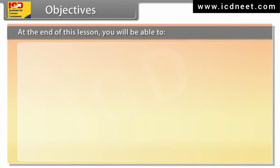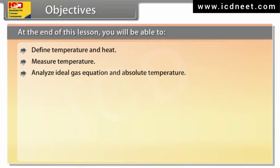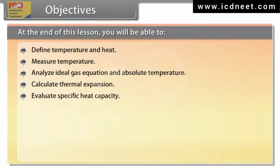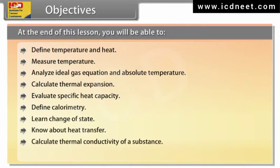Objectives: At the end of this lesson, you will be able to define temperature and heat, measure temperature, analyze ideal gas equation and absolute temperature, calculate thermal expansion, evaluate specific heat capacity, define calorimetry, learn change of state, know about heat transfer, calculate thermal conductivity of a substance, and define Newton's Law of Cooling.